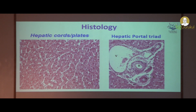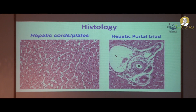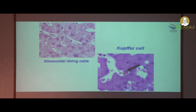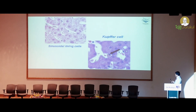Coming to the histology, this is the normal liver. You are seeing the hepatic cords here, the portal triad, the hepatic vein, the bile duct, the artery, and the lymphatics. These are the different components what you see in histology. The sinusoidal cells are the endothelial cells you are seeing here in the liver, and these are the Kupffer cells, which are the resident macrophages that engulf any foreign materials or pigments which are products of biotransformation.